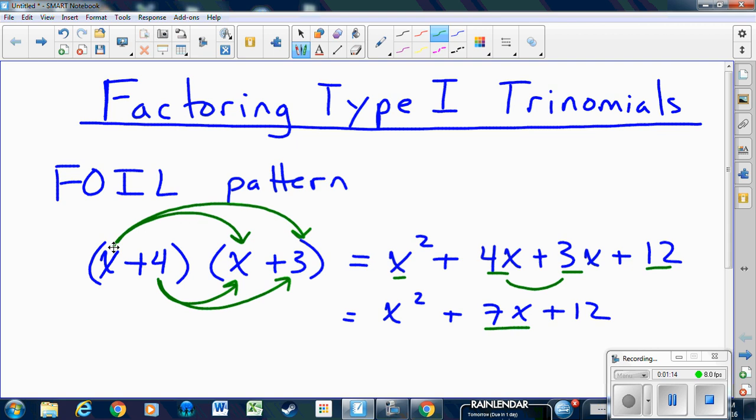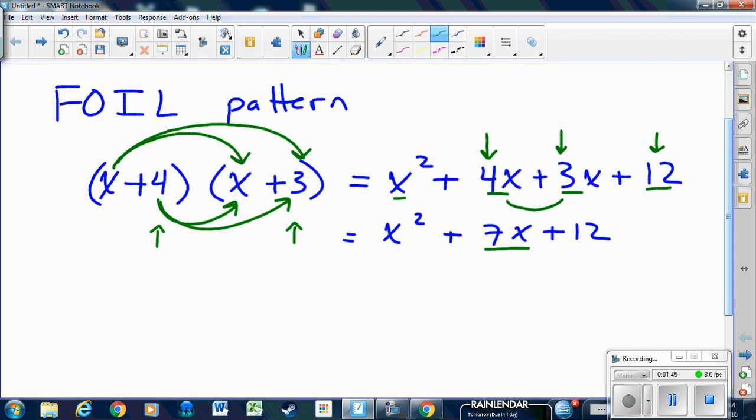Now what I want to point out is that the two middle terms, 4x and 3x, add together to give 7x, and those were the same two terms in the initial brackets. When you multiply those two terms, 4 times 3, it gives you the last term. So in order to deconstruct FOIL, you have to remember that pattern: the two numbers multiply to give the last number but add to give the middle number. That's what we're going to use as a pattern to factor our trinomial.